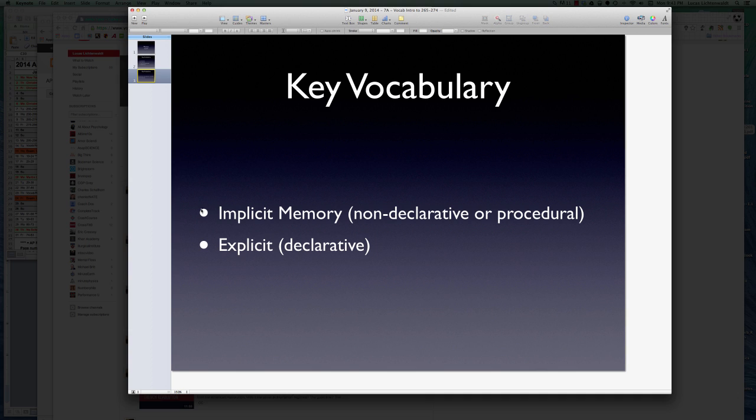Finally we've got implicit and explicit memories. Implicit memory has actually got three names you might see around. It's called implicit memory, non-declarative memory, or procedural memory. We usually refer to these types of memories with people with amnesia. People with amnesia lost their memory in some way. Implicit memory is the ability to learn how to do something, or the procedure to do something.